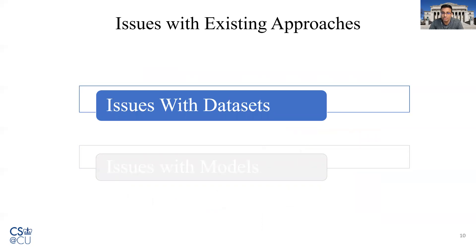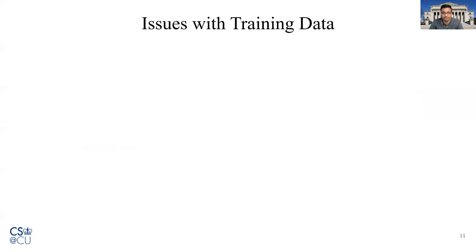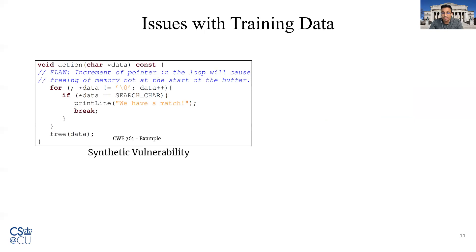First, let us discuss the issues with existing datasets. A vulnerability detection tool intended to identify real-world vulnerabilities must be trained on real-world vulnerable code. A lot of existing techniques are trained on synthetic or semi-synthetic vulnerable code, where the vulnerability is often isolated from the rest of the code. For instance, this code is a buffer overflow vulnerability. The vulnerable code is isolated and there is nothing else but the vulnerability code in this example. In real-world, source codes are not as isolated as this — real-world codes are much more complex.